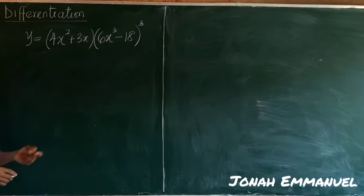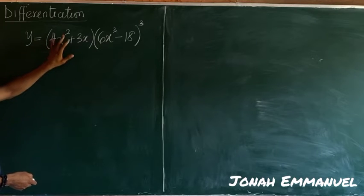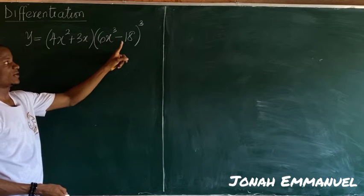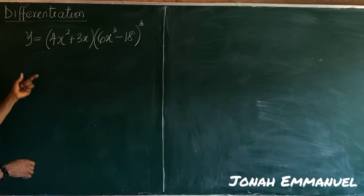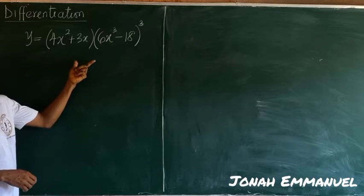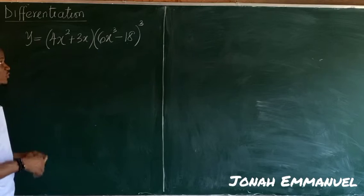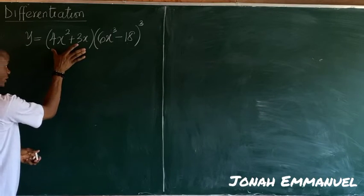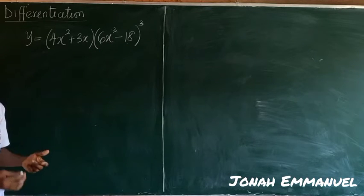So I'm asked to differentiate this. The case is this: I'm seeing that this 4x squared plus 3x is multiplying this 6x cubed minus 18 all to the power 3. So at this point now I will use product rule here. Why? Because this is multiplying this. So we said use product rule when I have two terms multiplying.